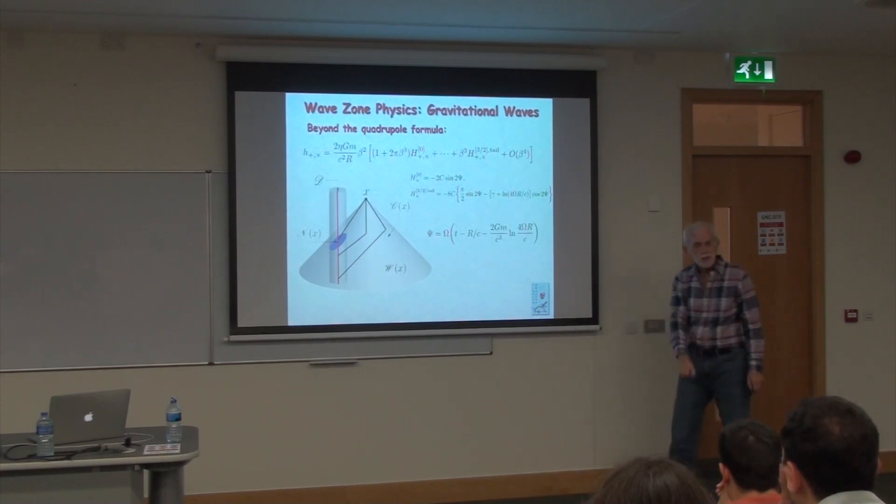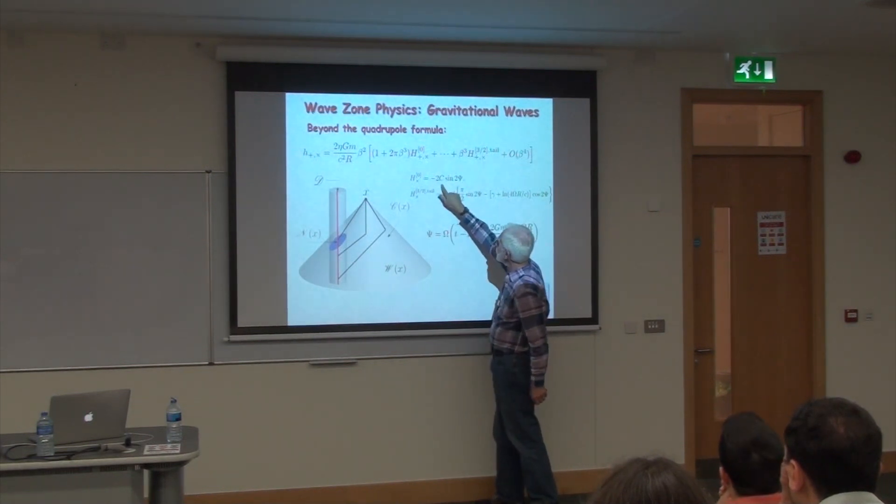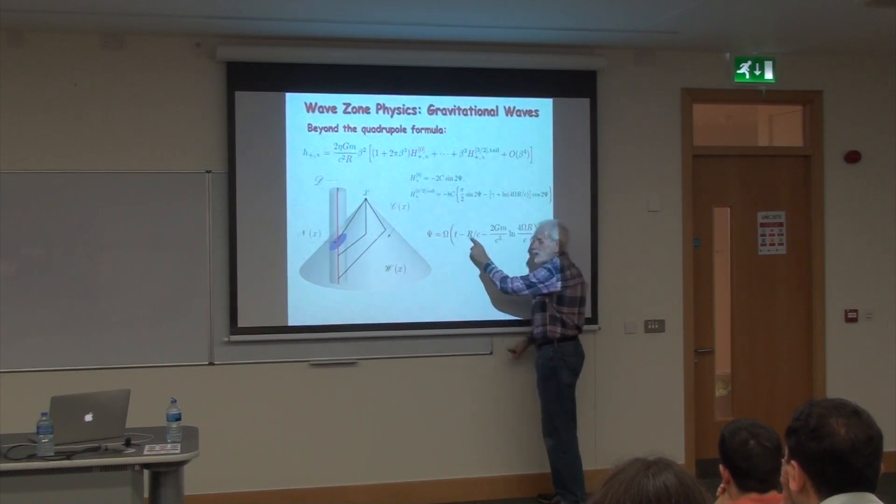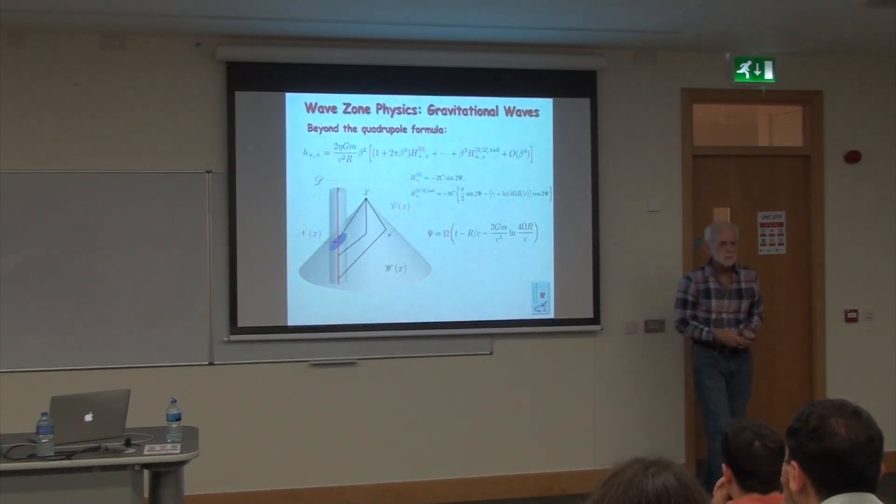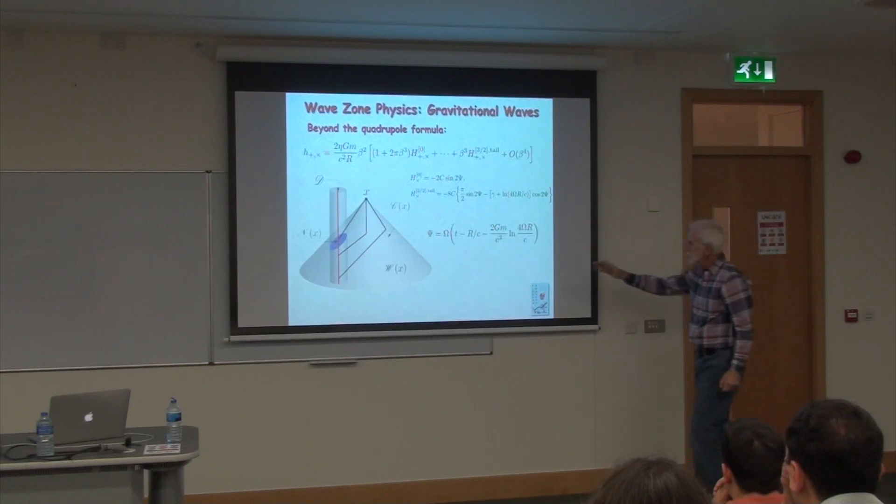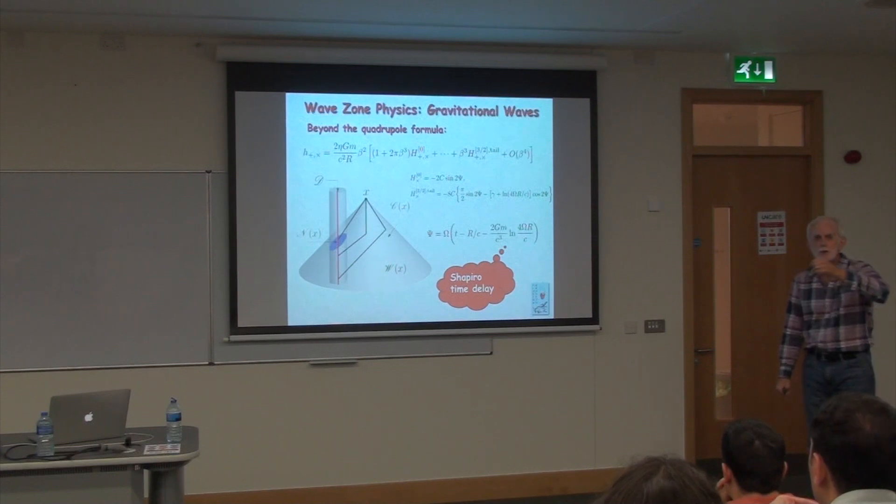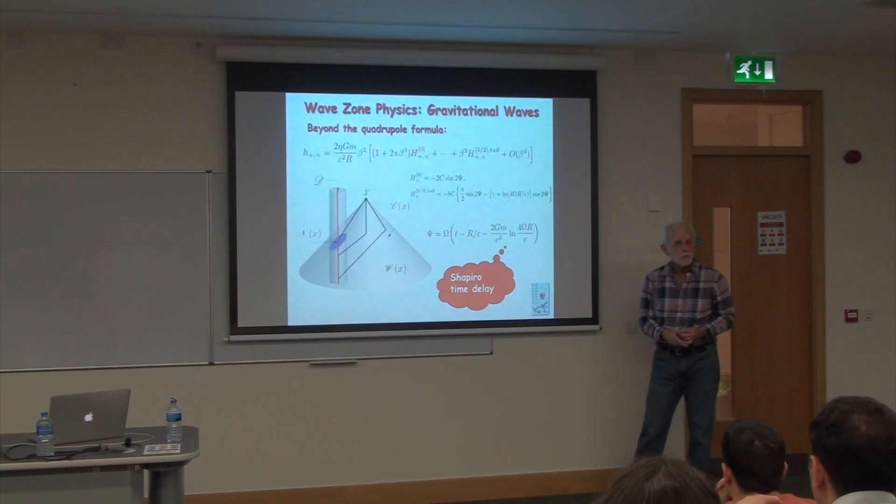So that tells us that in actuality, the gravitational waves, if we look at the leading component, are propagating not along the past flat space-time null cones, but along a null cone that also includes this logarithmic dependence on r. What's the meaning of this term? This is nothing but the Shapiro time delay, a light signal propagating away from the source of mass m. It's delayed because it's propagating through curved space-time, not flat space-time, and that is this logarithmic term.